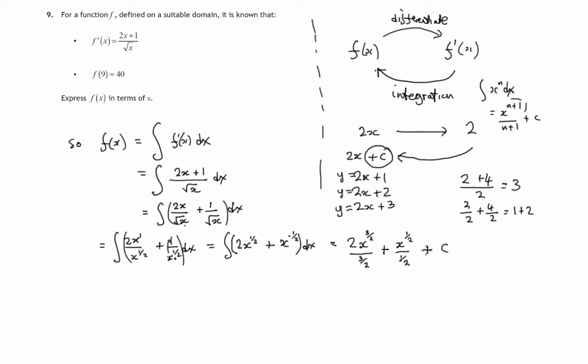So let's try and simplify what we've got. Let's double the top and bottom here, that would be 4 lots of x to the 3 over 2 divided by 3. And let's double top and bottom here, we'll get 2x to the half over 1 plus the constant.